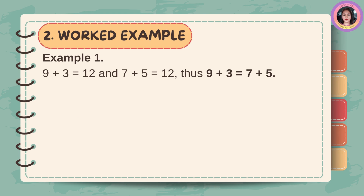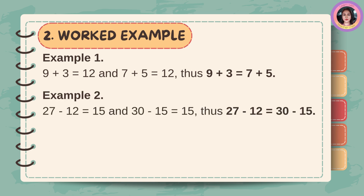Look at these examples. Example number 1: 9 plus 3 is equal to 12, and 7 plus 5 is equal to 12. Example number 2: 27 minus 12 is equal to 15, and 30 minus 15 is equal to 15.